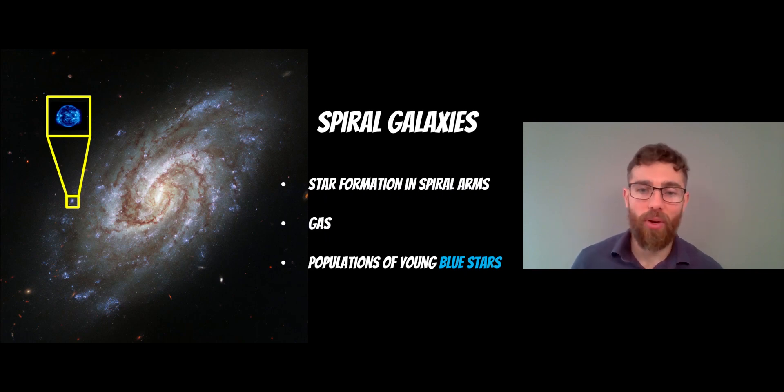But a general spiral galaxy is going to have generally gas. It's going to have more blue stars than elliptical, for example. So you get star formation, which happens in the spiral arms. They're fairly easy to spot because of their shape.